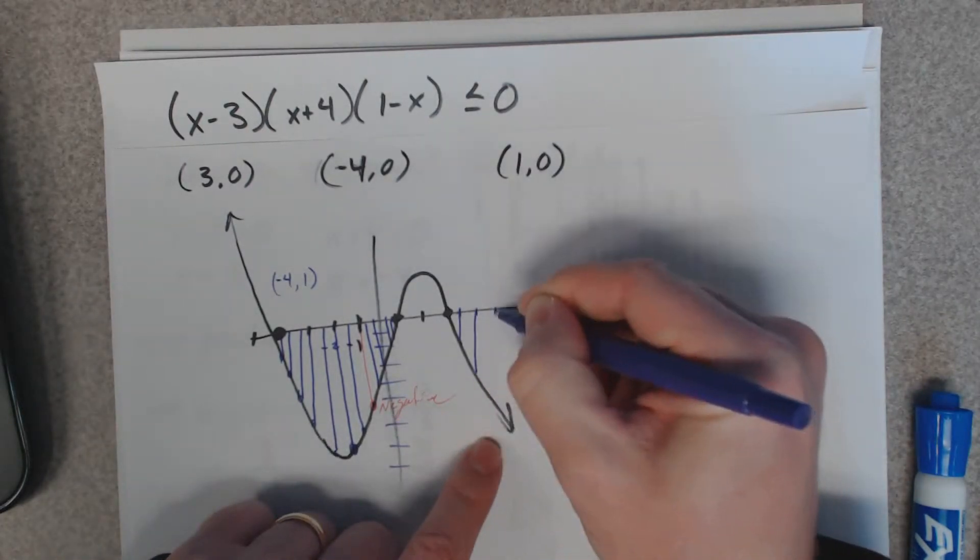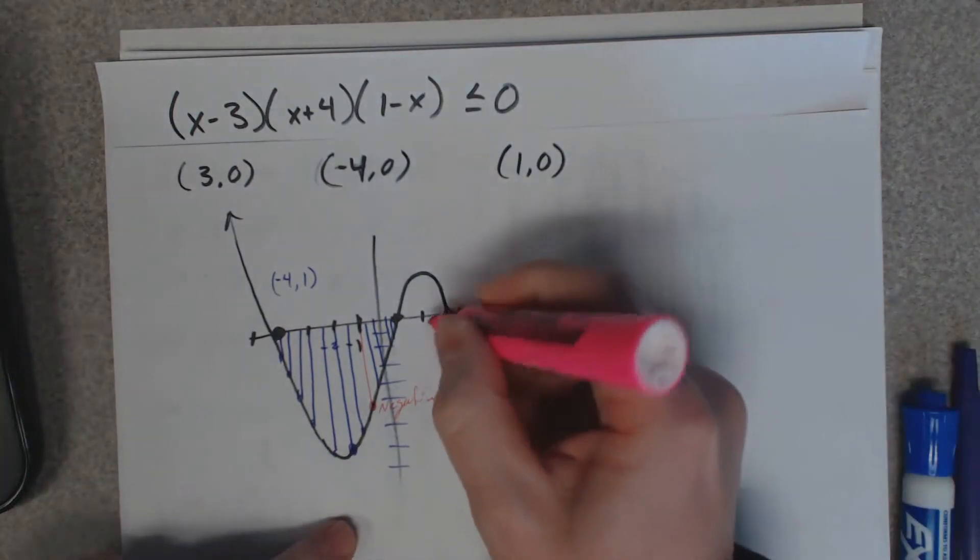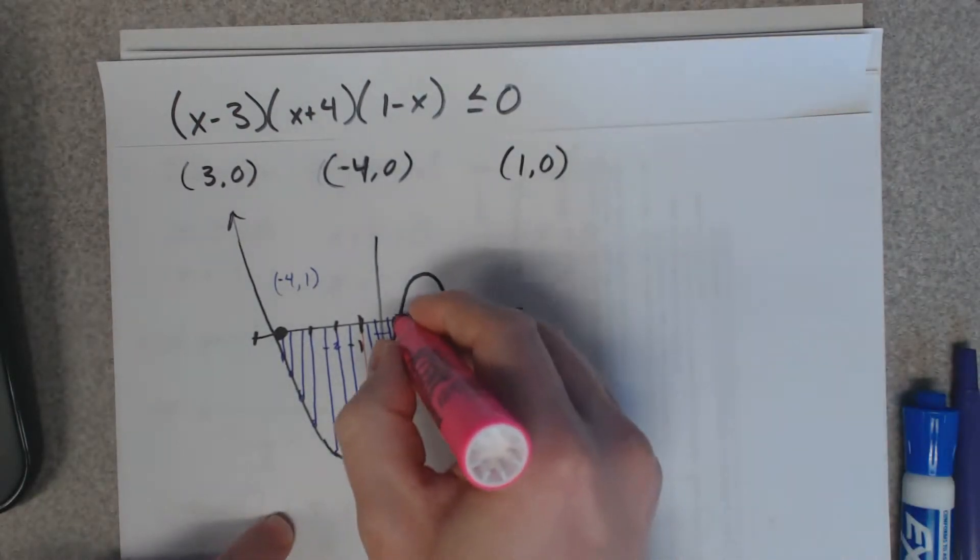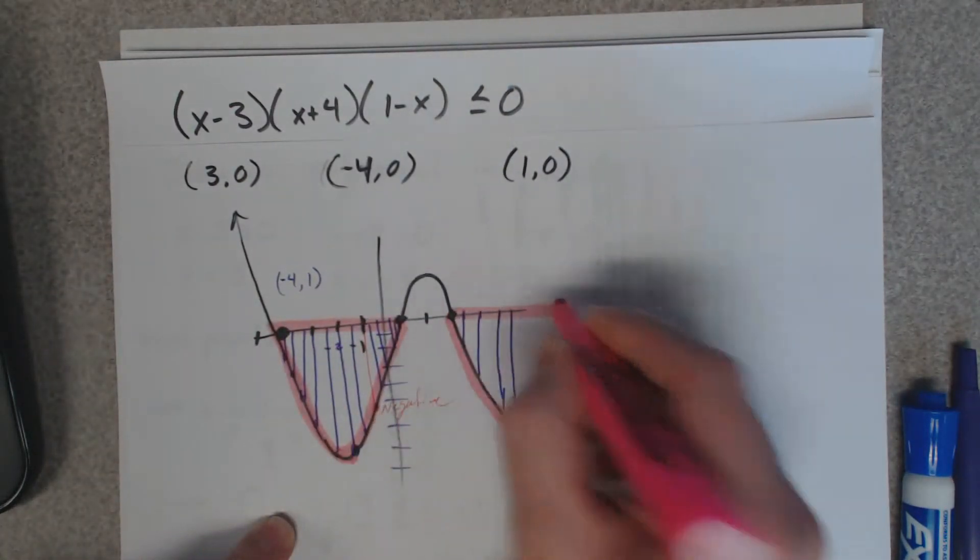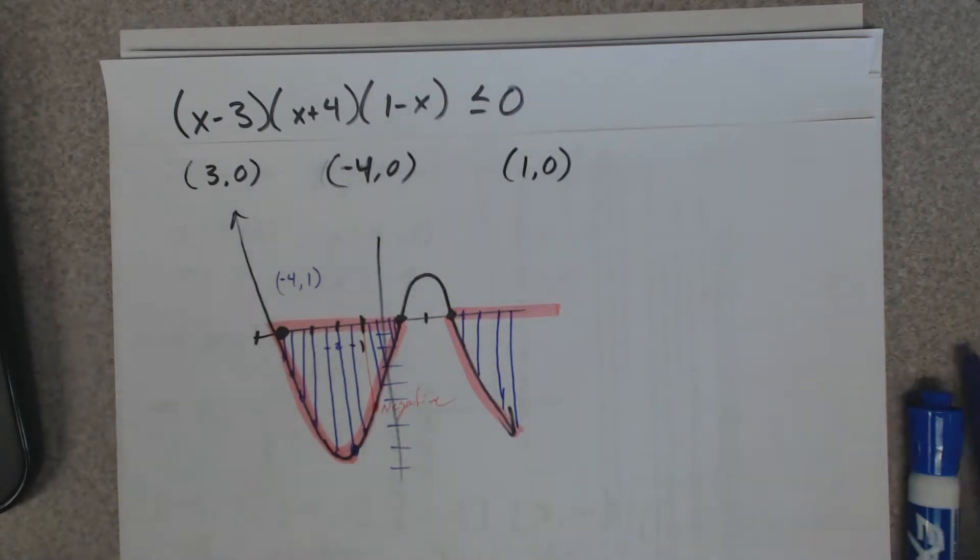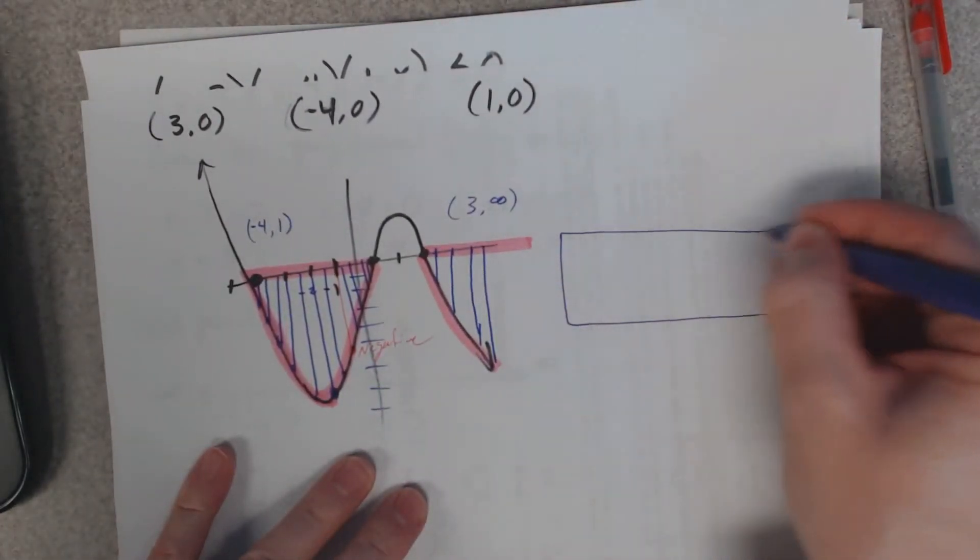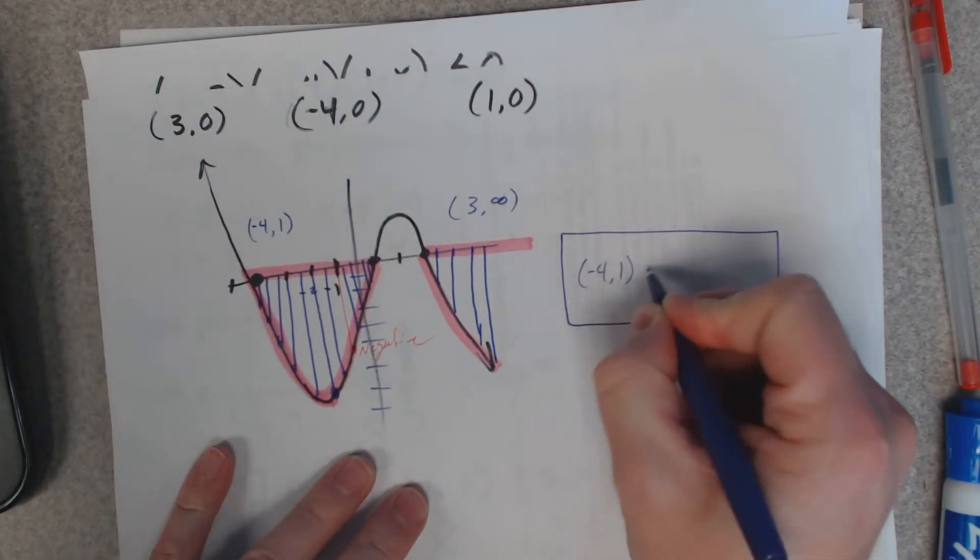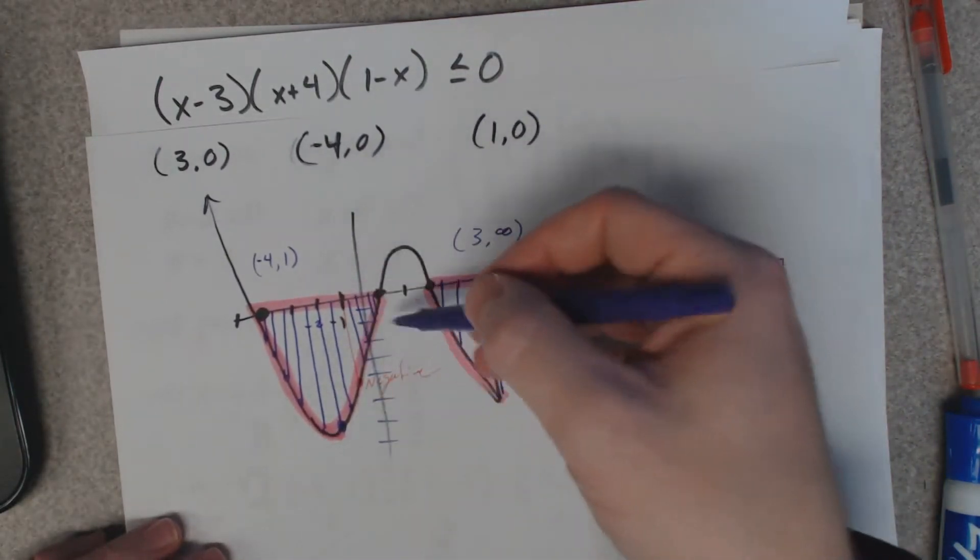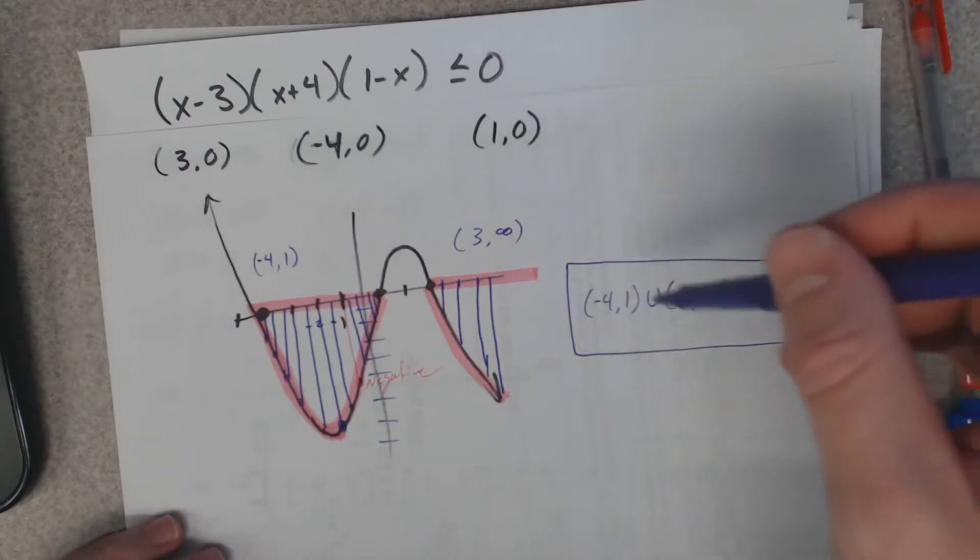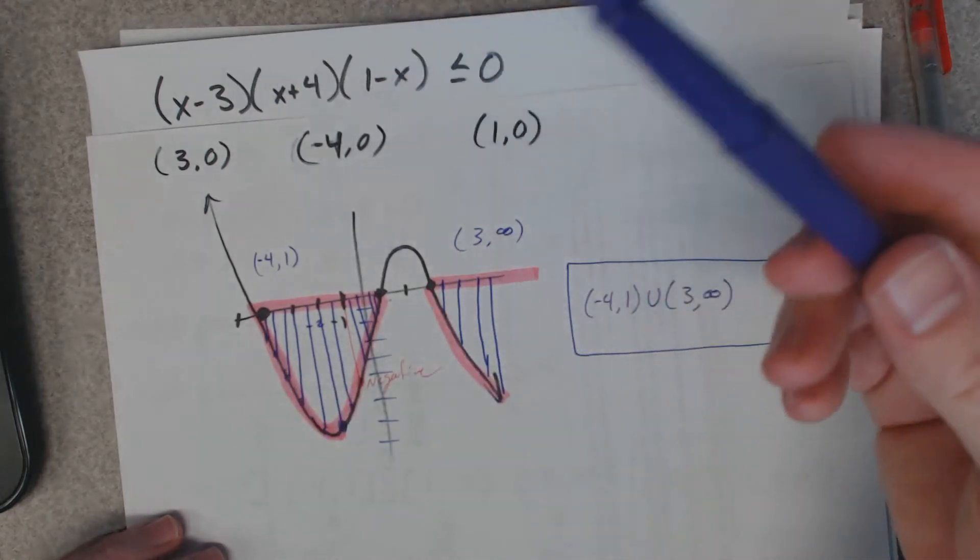I can highlight it, maybe it's a little easier if I highlight it. This part is negative and this part of the graph is negative, from negative 4 to 1 and from 3 to infinity. So your answer then in your answer box is [-4, 1] union [3, ∞), because those are the two parts of the graph that are below. This part of the graph here is below the x-axis. I call it the negative part of the graph, and you want negatives because it's less than.